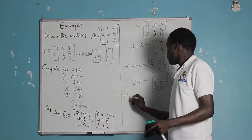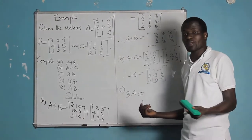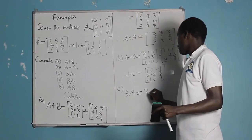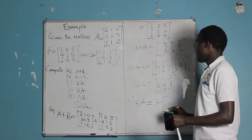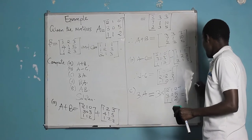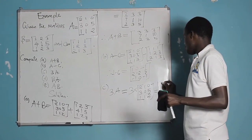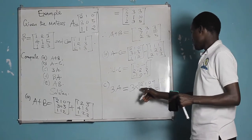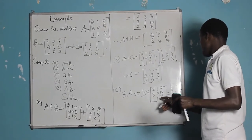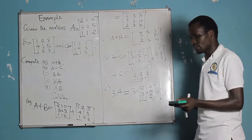Part C: scalar multiplication, finding 3 times A. Here 3 is a scalar and A is a 3×3 matrix with entries 2, 1, 0 / 3, 0, 5 / 1, 1, 2. We multiply 3 by each entry: 3×2=6, 3×1=3, 3×0=0 / 3×3=9, 3×0=0, 3×5=15 / 3×1=3, 3×1=3, 3×2=6. So 3A is the matrix with entries 6, 3, 0 / 9, 0, 15 / 3, 3, 6.